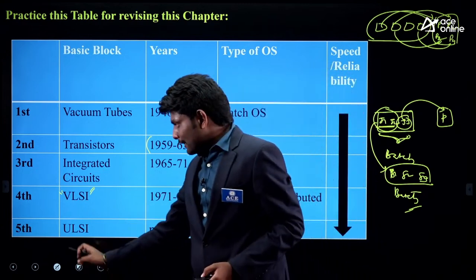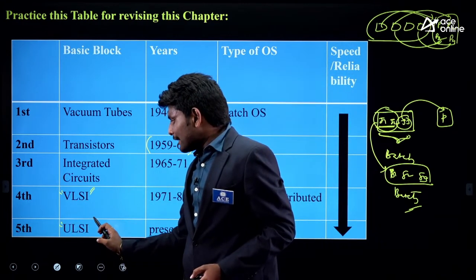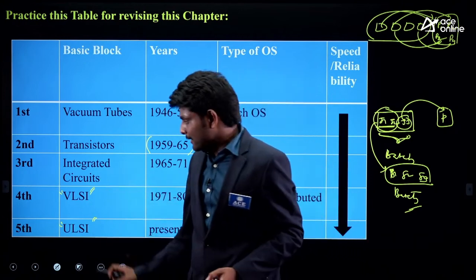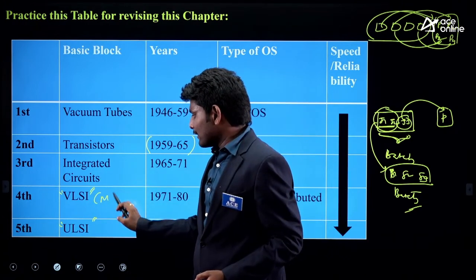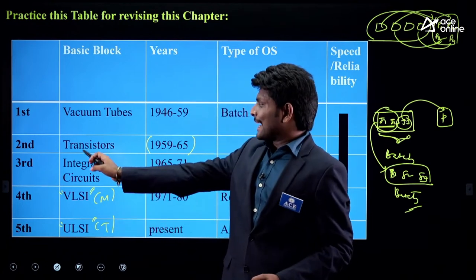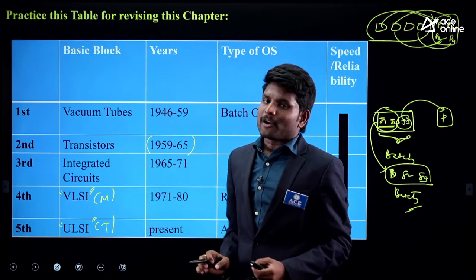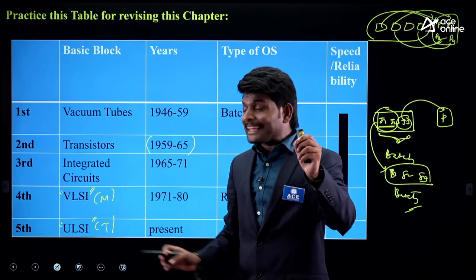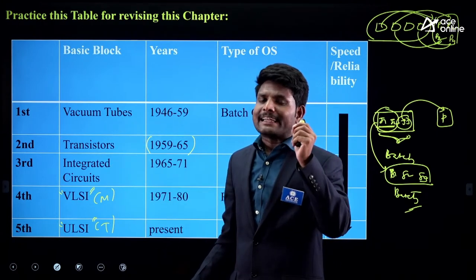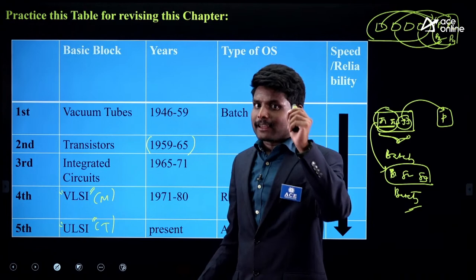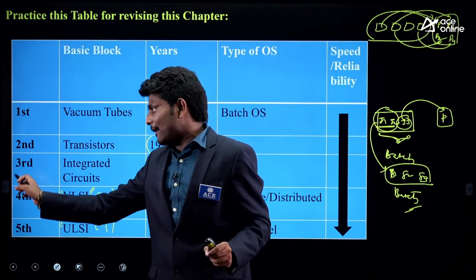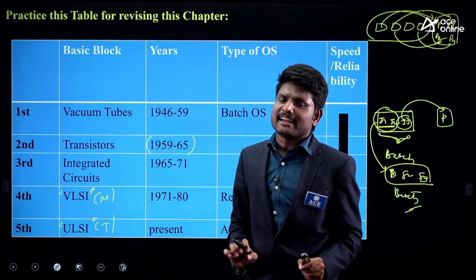In the 5th generation, they used ULSI — Ultra-Large Scale Integrated Circuits — using the same strategy. Where 4th generation used millions, 5th generation uses trillions. From 3rd to 5th generation, they are using integrated circuits — but the number of integrated circuits on a chip is what differentiates the generations and increases computing power.